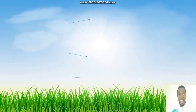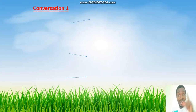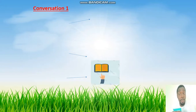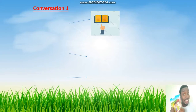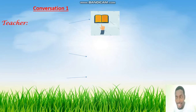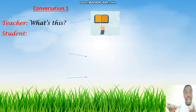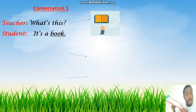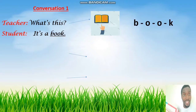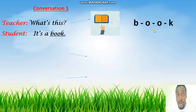In this slide, let's look at the conversation. Can you see the picture? That's a picture of a book. So we're going to have a teacher asking: What's this? The student is going to say: It's a book. Let's spell book — it's B-O-O-K. Book.